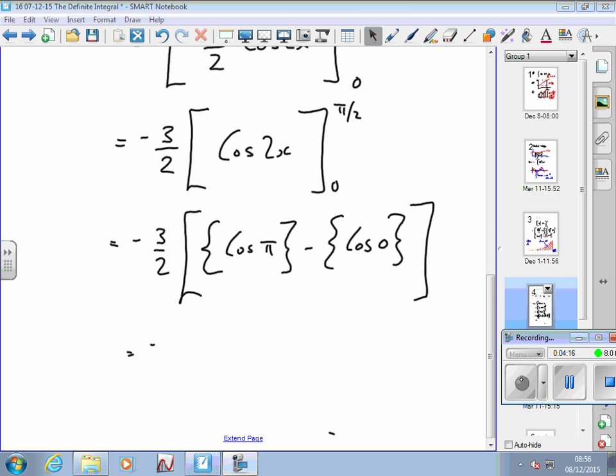So now calculator out, minus 3 over 2, brackets cos of π, cos of π and cos of 0.